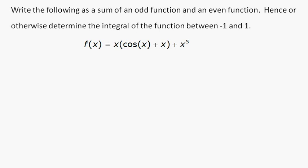This question is concerning odd and even functions. We have a function of x given as x times cos x plus x plus x to the 5. We have to write it down first of all as a sum of an odd function and an even function, and then we've got to find an integral. But let's worry about the odd and even function first of all.